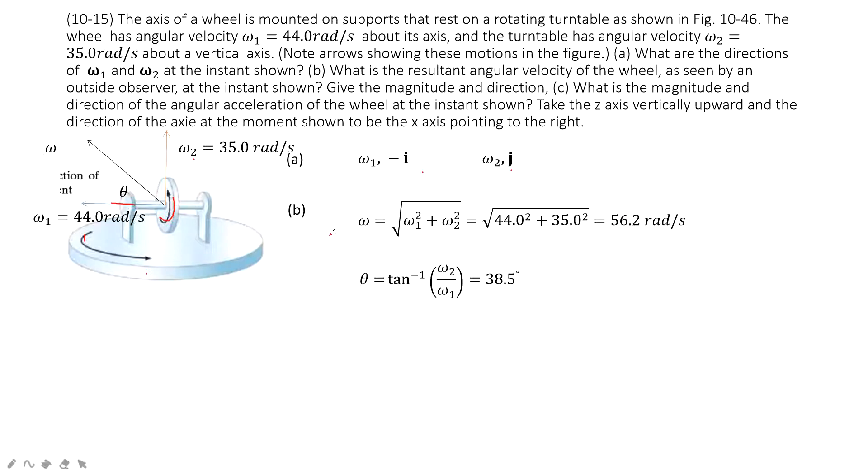Now we need to find the addition of these two angular velocities. These angular velocities are vectors, so we add them together using the triangle rule. We find the magnitude of this addition, the angular velocity, and the angle theta.